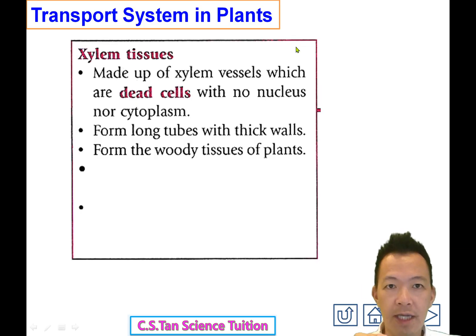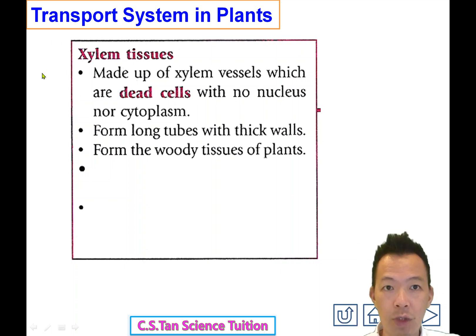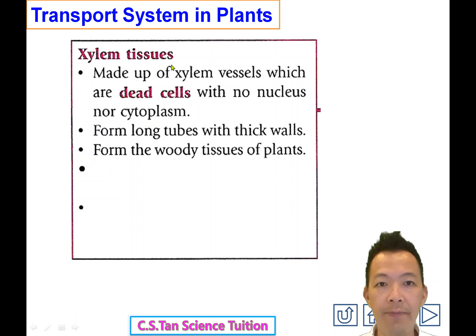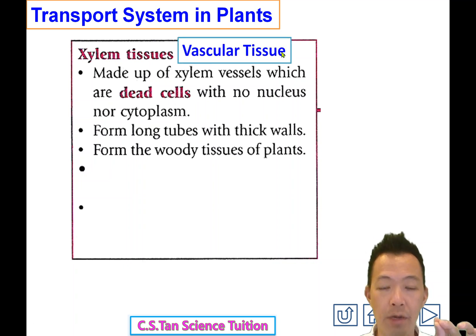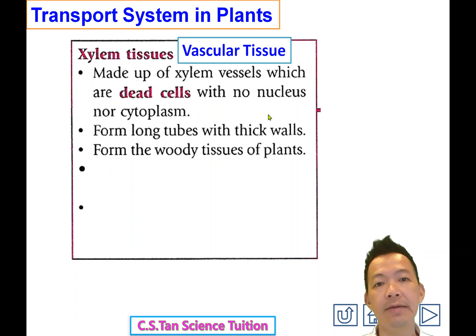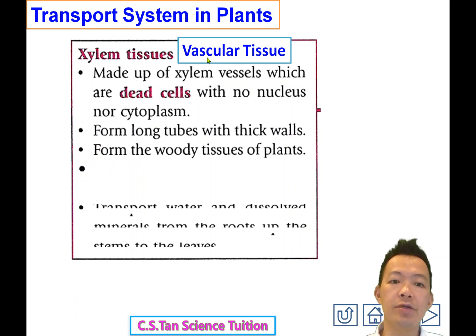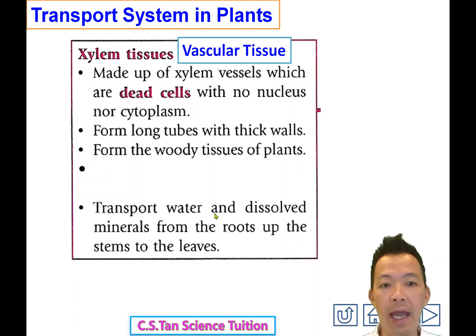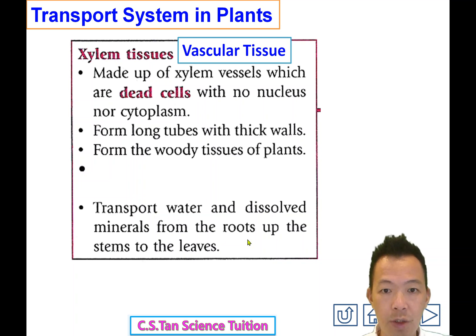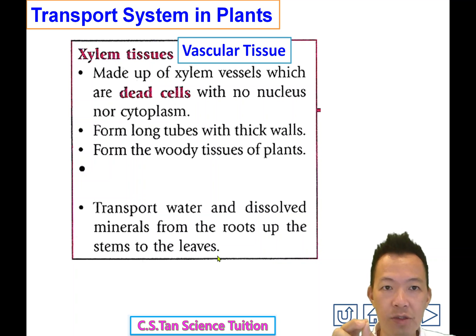For plant transporting tissue 輸送的組織, there are only two types. The first one we call xylem tissue — 第一種叫xylem tissue. It's a vascular tissue 血脈組織. The function of xylem tissue is to transport water and minerals 把水和礦物質從根送上去.